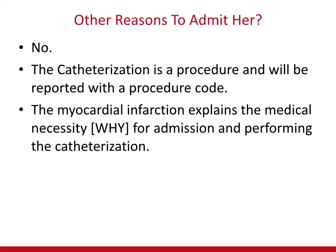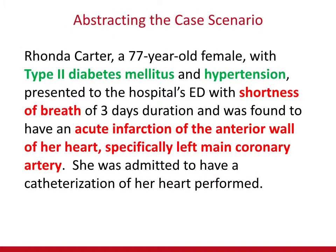Are we telling the whole story about Rhonda Carter's reason for being in the hospital and the care she will receive? Let's take a look again. We have the reason why she was admitted — valid medical necessity — and why the catheterization is going to be performed. But then there's this mention of type 2 diabetes mellitus and hypertension. Am I supposed to code that or not? It has nothing to do with why she's being admitted — so, hmm, what should I do?